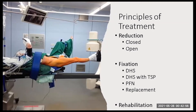Now we come to the operative treatment. The principles are simple: reduction — many cases can be achieved with closed reduction, and open reduction is uncommonly needed. The fixation options are the DHS, DHS with a trochanteric support plate, or a proximal femoral nail, and in very few indications, replacement. This is followed by rehabilitation, which is not straightforward.